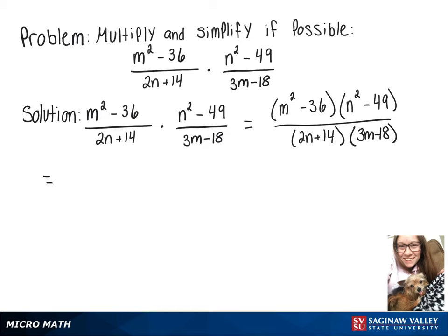On top, we have two differences of squares, so m squared minus 36 turns into m plus 6 times m minus 6. And n squared minus 49 turns into n plus 7 times n minus 7.